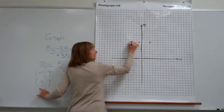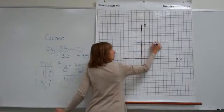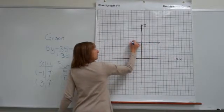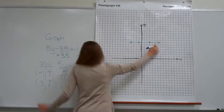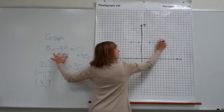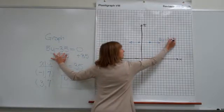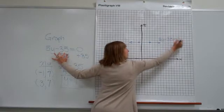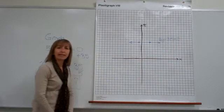Now connecting these two points, we get the graph of our equation, which is 5y minus 35 is equal to 0. We have just graphed that equation. Thank you.